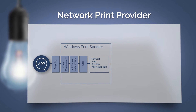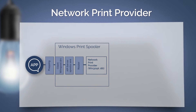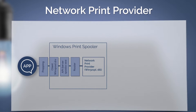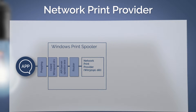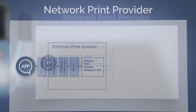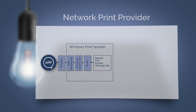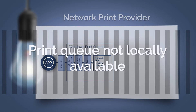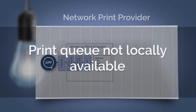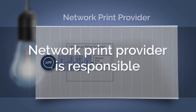When printing via a network, the term generally used is shared printing. This is where the Windows network print provider comes into play. The same occurs here as with the local print provider, up until the router determines that the print queue is not locally available, and thus the network print provider is responsible for the print job.